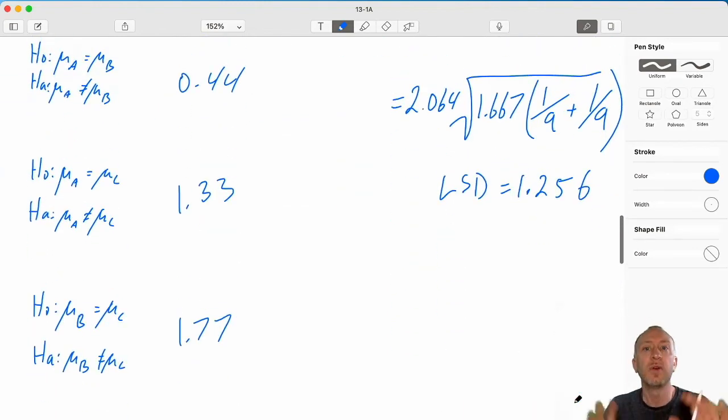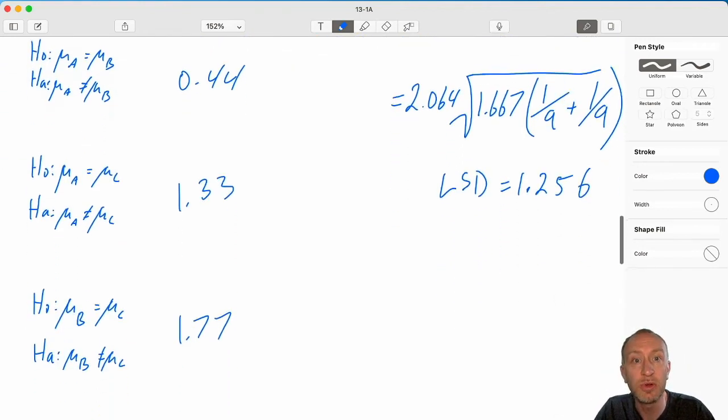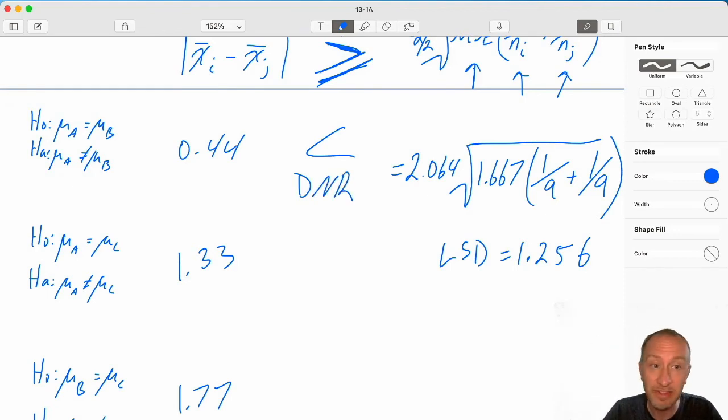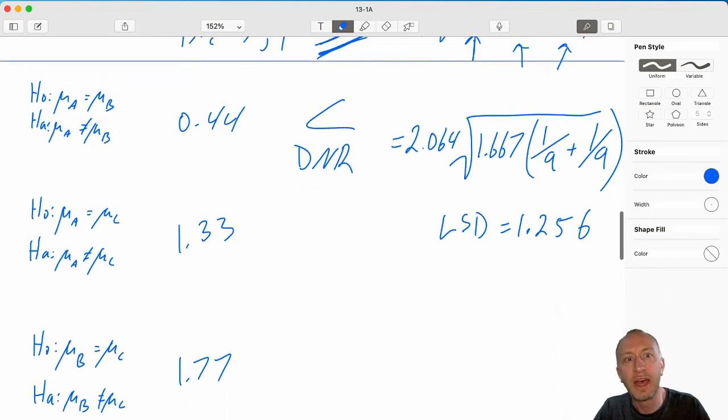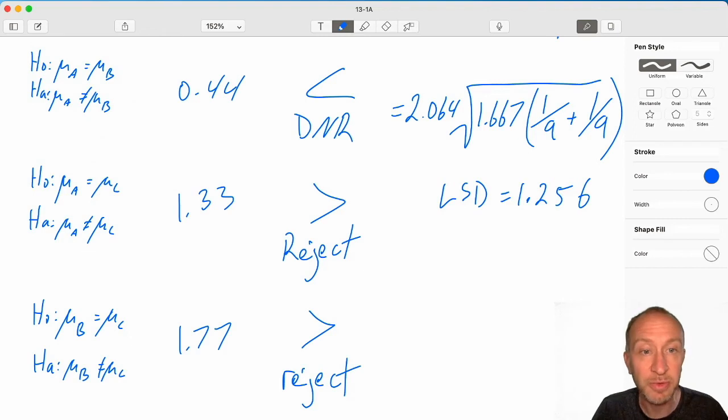Okay. So we have our test statistic. We have our critical value. Our rejection rule is that if our test statistic is greater than or equal to that LSD, we reject. So now I can just go through our different comparisons. I can see here this one is less than. I am not going to reject that first test. I have no reason to believe there's a difference between our two types of toothpaste or tooth whiteners. However, I reject on the second test. So the type A is different from type C, the control. And certainly I can reject on the next one as well. There's a difference between type B and the control.